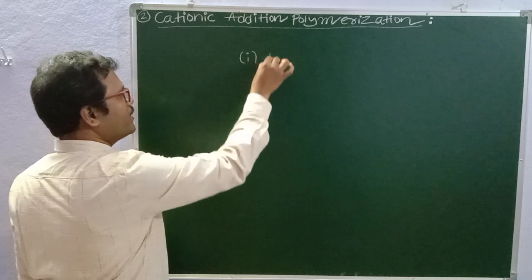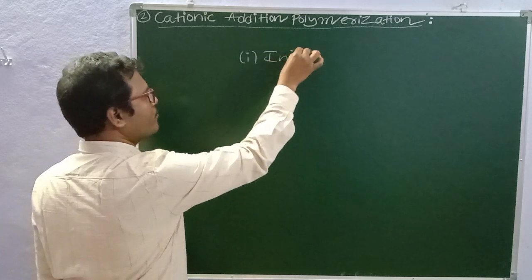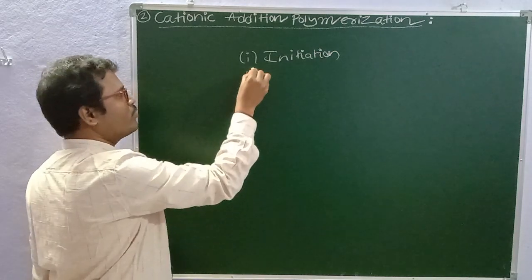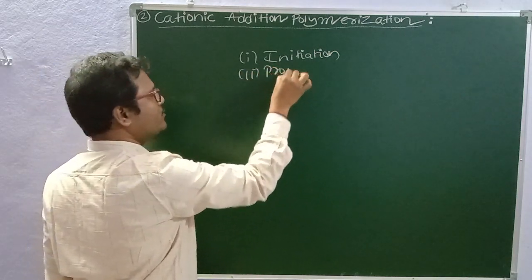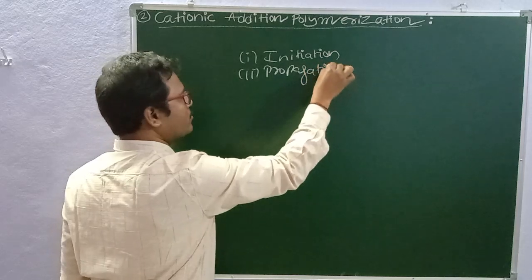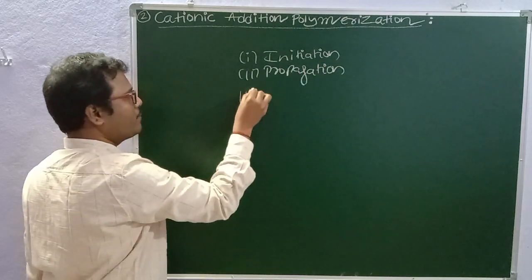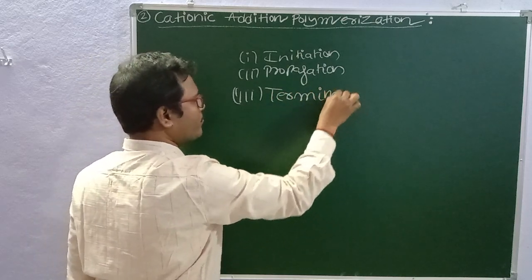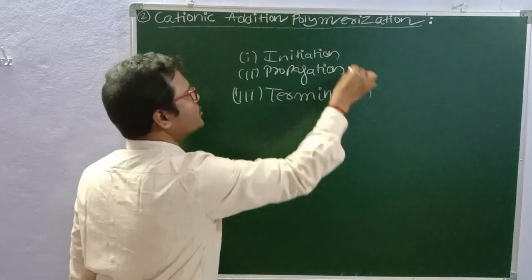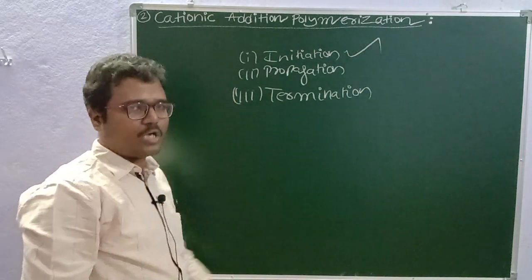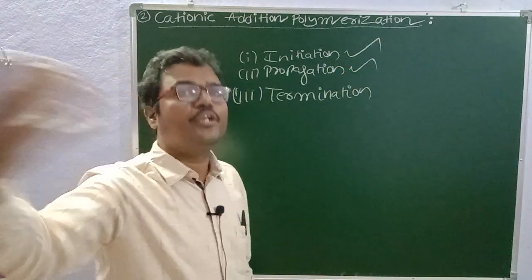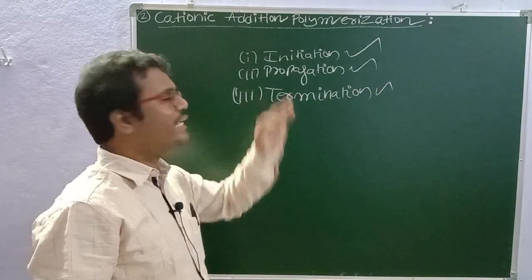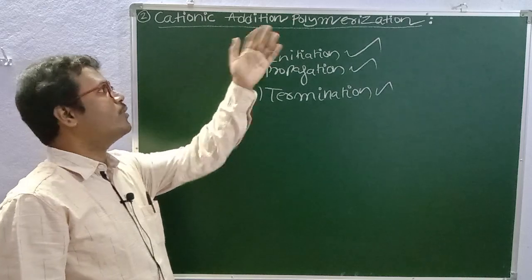This addition polymerization mechanism has three steps. Step number one is initiation — initiation is where the polymer chain growth starts. Step number two is propagation — propagation is where the polymer chain growth continues. Step number three is termination — termination is where the polymer chain growth finally stops.